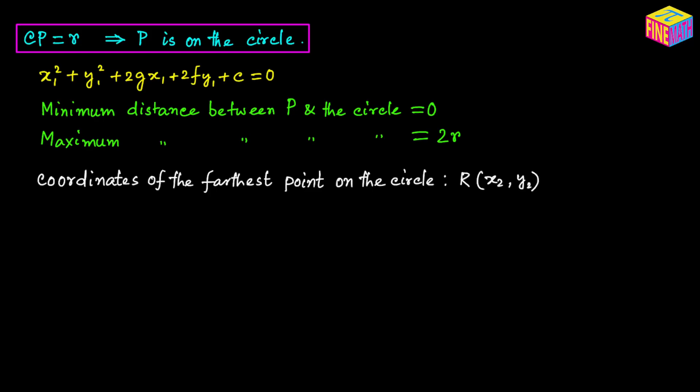What are the coordinates of the farthest point on the circle? That point is R. We can easily calculate the coordinates of R because we know the coordinates of P and the coordinates of the center C, which is the midpoint between P and R. So using the section formula, we can calculate (x₂, y₂).